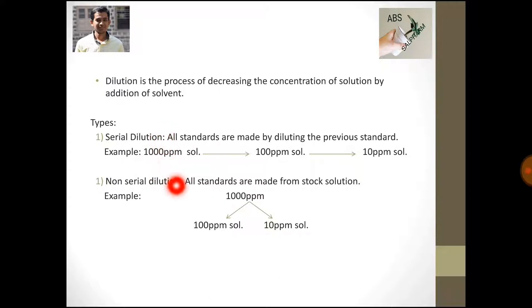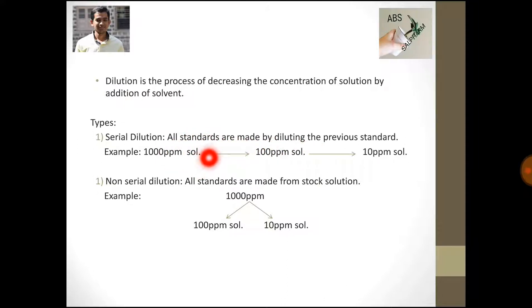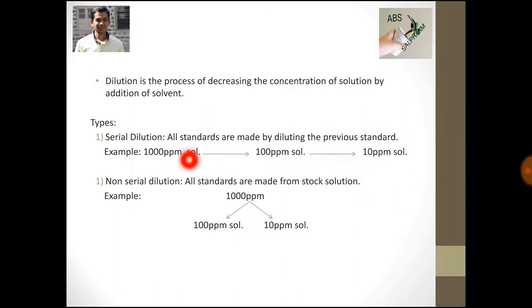There are basically two types of dilution: serial dilution and non-serial dilution. In serial dilution, for example, if this is a 1000 ppm stock solution, I am preparing a 100 ppm solution from it, and then a 10 ppm solution from that 100 ppm solution.